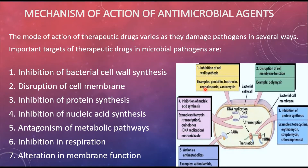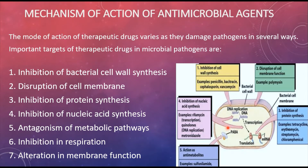In the diagram, inhibition of cell wall synthesis is caused by certain antibiotics like penicillin and bacitracin. Disruption of the plasma membrane is caused by polymyxin compounds B and E. Inhibition of protein synthesis means these antibiotics will not allow the bacteria to perform protein synthesis, which is essential for its growth. Inhibition of nucleic acids — DNA replication and RNA — is carried out by certain antibiotics, and the action of antimetabolites such as sulfonamides blocks metabolic pathways.